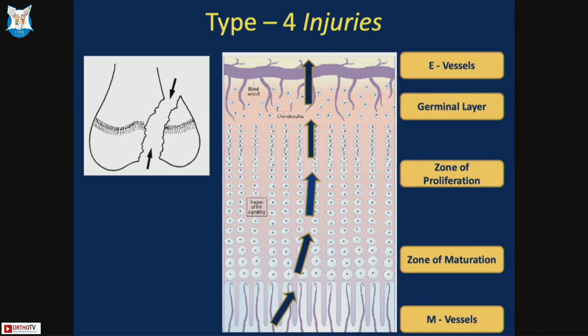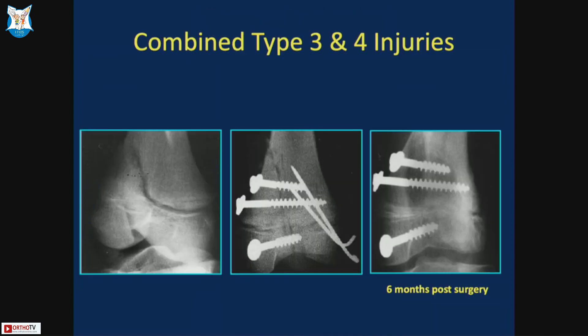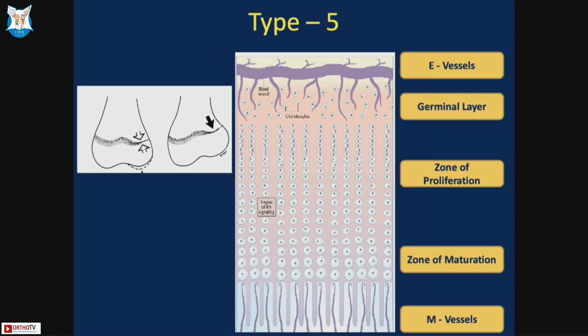In Type 4 injuries, the fracture propagates from the metaphysis through the growth plate and through the articular cartilage. Both epiphyseal and metaphyseal vessels are affected, resulting in high rates of growth arrest and bar formation. There is also an intra-articular step that must be addressed. A case of combined Type 3 and 4 injuries was fixed with epiphyseal and metaphyseal screws and medial K-wires, but at six months post-surgery there was evidence of physeal bar formation on the medial side. Anatomic alignment at the articular level is critical.